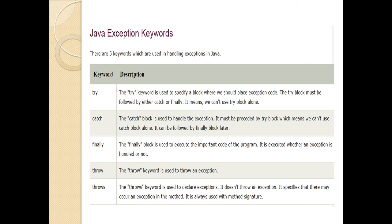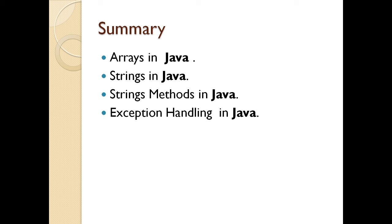Now these are some exception keywords. There are five keywords which are used in handling exception. We have the try keyword which we use to specify a block where we should place the exception code. The try block must be followed either a catch or a finally. A catch block is executed when you have caught the exception and what exactly or what code you have to write and what action has to be done. The finally block is used to execute the important code of the program. It is executed whether an exception is handled or not. The throw keyword is used to throw an exception which will be caught by the catch block. Throws keyword is used to declare the exception. It doesn't throw an exception. It specifies that there may occur an exception in the method. It is always used in the method signature. We will be looking into each and every keyword when we are going to do Java practical.